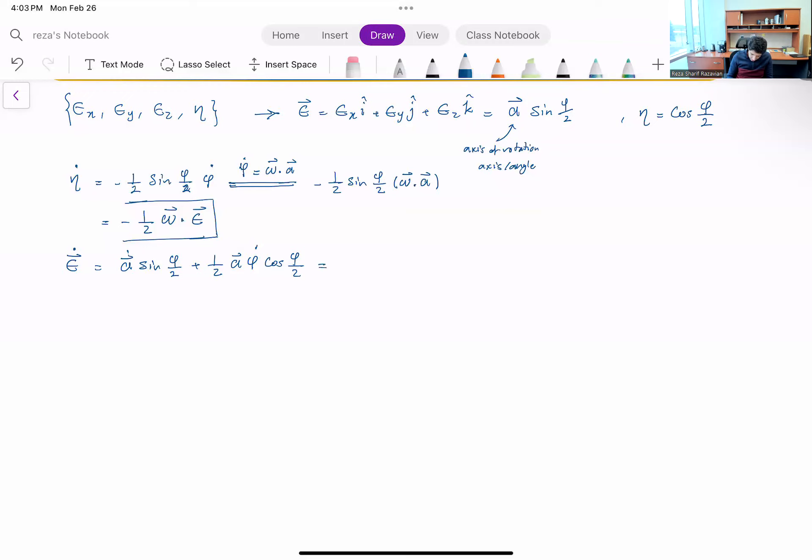And I can keep doing a bunch of derivations that the details are in the textbook. I'm going to skip that. What I end up with, this rate of change of vector epsilon, is minus one half epsilon cross omega plus one half eta times omega. And I hope you can appreciate the much simpler form of this equation compared to the one we had for the axis-angle in the last video.